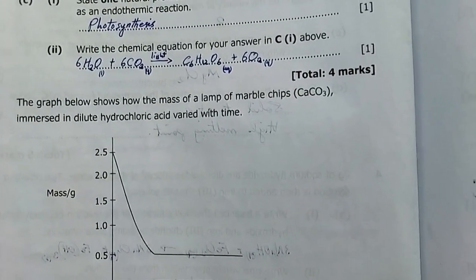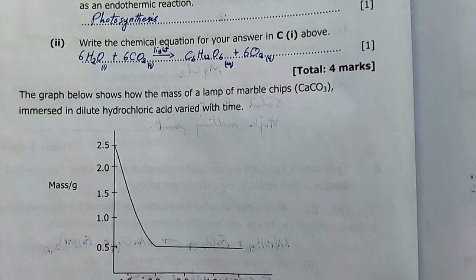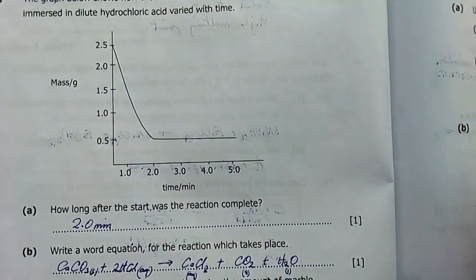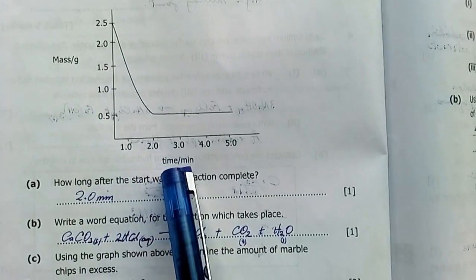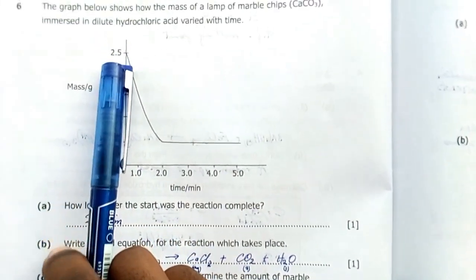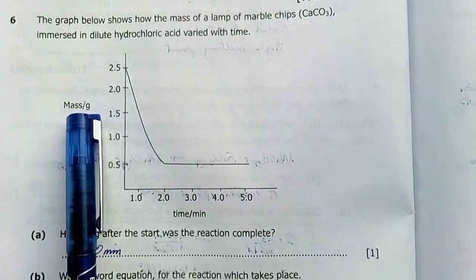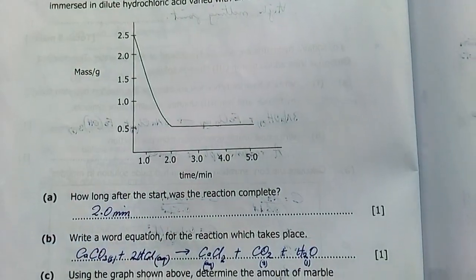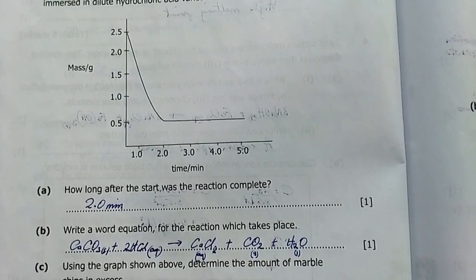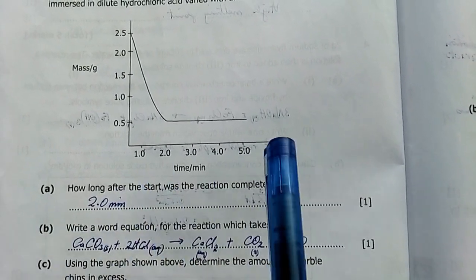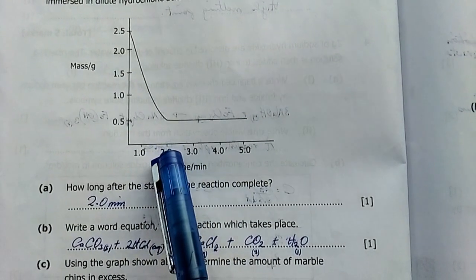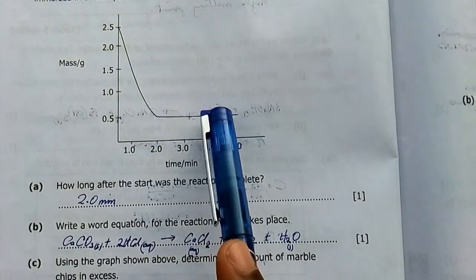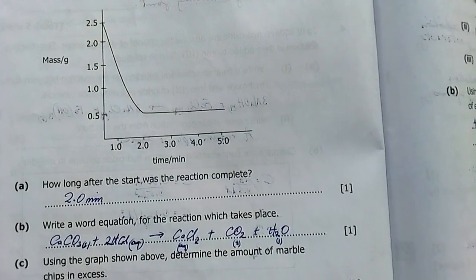Question 6: The graph below shows how the mass of a lump of marble chips immersed in dilute hydrochloric acid varied with time. You can tell from the graph this is mass and that is time in minutes. The initial mass was 2.5 grams. How long after the start was the reaction complete? It was approximately two minutes from this point here to there. Afterwards the mass remained constant with time.